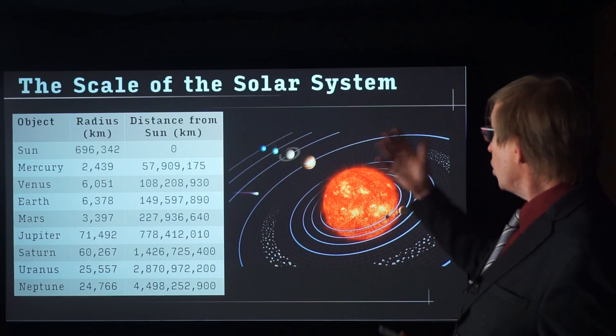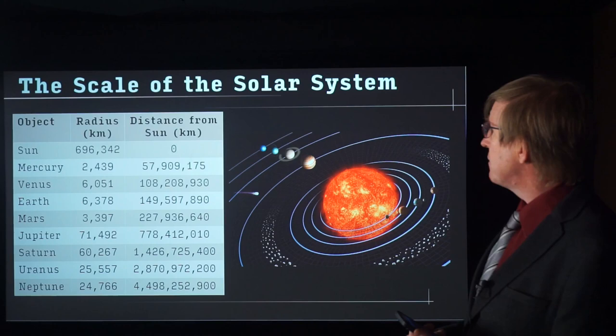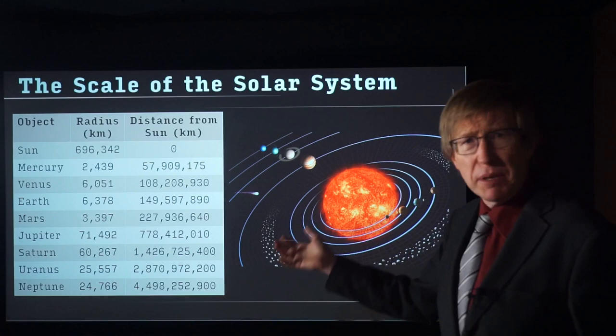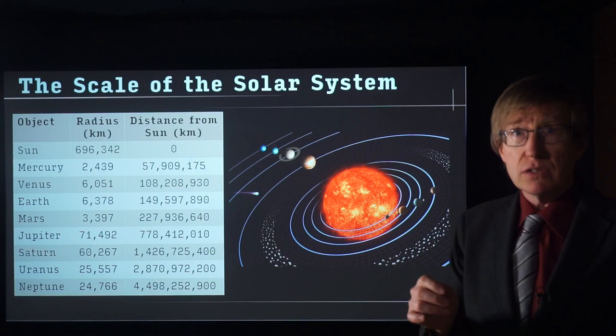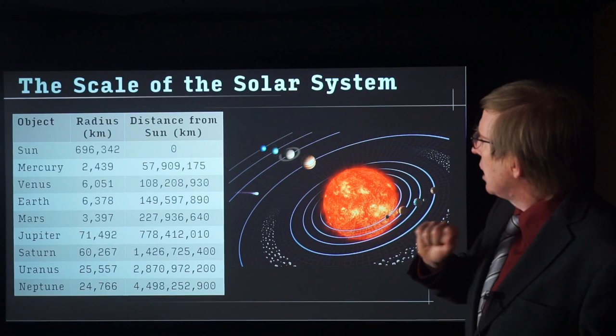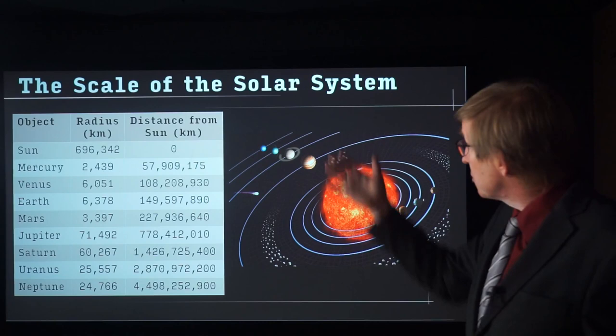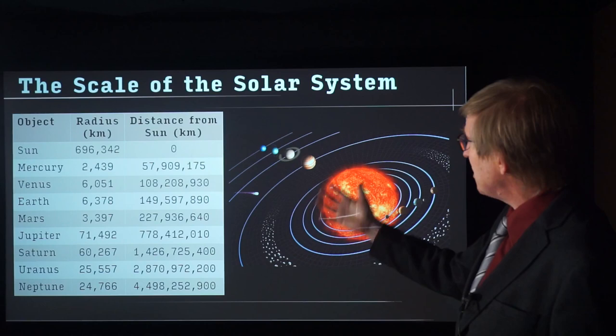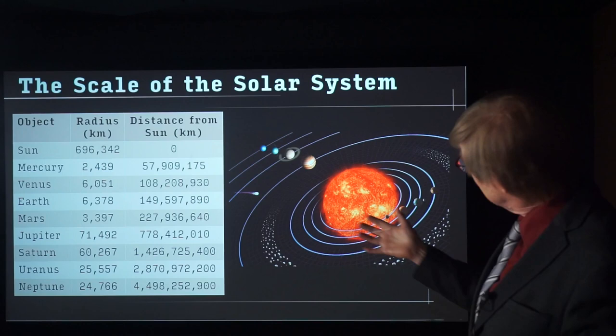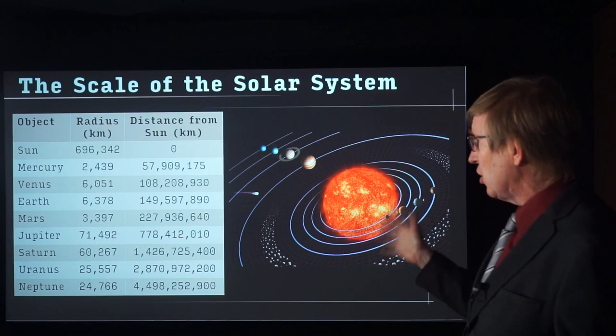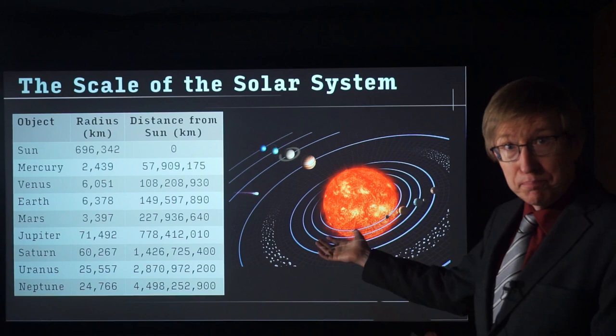The first step is to look up all the sizes and distances in the solar system. Here's a table of sizes and distances — you can look this up on Wikipedia for general knowledge. The first column is the objects: the Sun, Mercury, Venus, Earth, Mars, Jupiter, Saturn, Uranus, and Neptune. The second column is the radius — the distance from the center to the edge. The third column is the distance from the Sun. These are just really big numbers, lots of digits and commas, and I just cannot picture them.